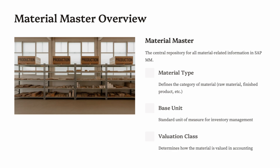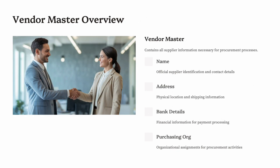Each segment is maintained depending on how the material is used. A single material can be relevant for multiple plants or storage locations. Example: a laptop — Basic Data: Dell Latitude 5530, base unit PC; Purchasing: Purchasing Group 001 IT, delivery time 7 days; MRP: lot size EX (lot-for-lot), reorder point 10; Accounting: valuation class 3000 (trading goods). SAP categorizes materials into types: ROH (raw materials), FERT (finished products), HALB (semi-finished products), HIBS (operating supplies), and packaging materials. Each type defines the allowed views and processes for the material.